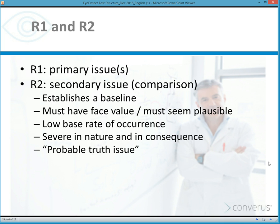A test could also include three topics as the R1 issue. In a typical law enforcement pre-employment test, the test would discuss drug use, involvement in serious crimes, and possibly falsifying the police department application — three topics combined into one for a multi-issue test. So there are single issue tests and multi-issue tests, and those issues are the primary issue or the issue of most concern.